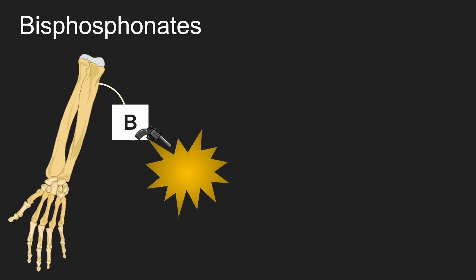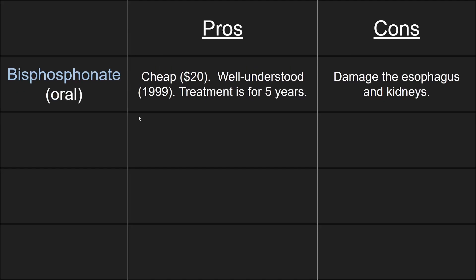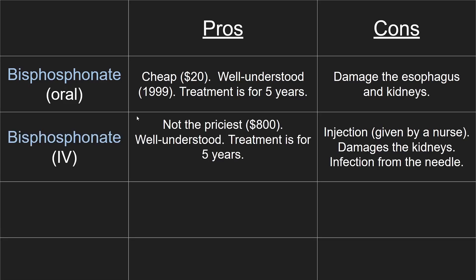Also, bisphosphonates cause osteoclast cells to die. What's good is that they're cheap, have been around for over 20 years and are well understood, and the treatment lasts 5 years. What's bad is that they damage the esophagus and the kidneys. Damage to the esophagus happens when we take bisphosphonates orally — if we inject them IV, then we avoid damaging the esophagus. Having them injected is pricier, but still a relatively cheaper treatment compared to those we will discuss later. Also, a nurse has to administer them and there's always a risk of infection with any needle stick.